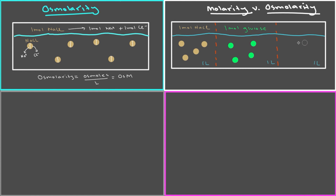The third solution has one mole of magnesium chloride, MgCl2. Since every case has one mole in one liter, the molarity in each case is just one.